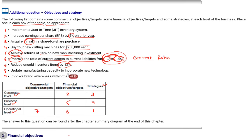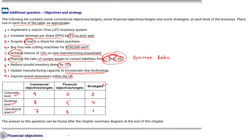Eighth item: update manufacturing capacity to incorporate new technology — a vague line with no financial figures, so it's a commercial objective at the business level, since it's not a long-term growth plan but rather supporting medium-term targets. Ninth item: improve brand awareness within the UK — brand decisions are made by top-level management because they are concerned with business growth. It's a general thinking-level decision, so it is a commercial objective at the corporate level. That completes the chart.